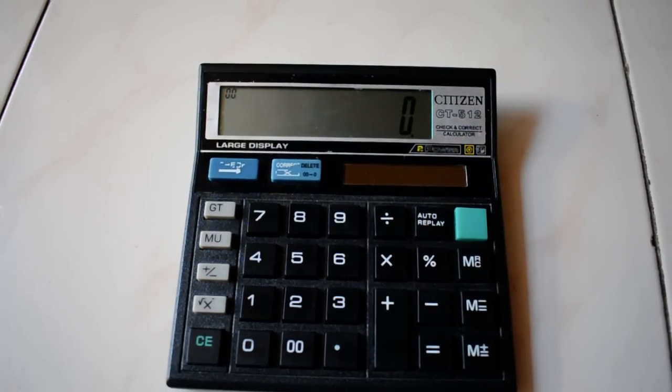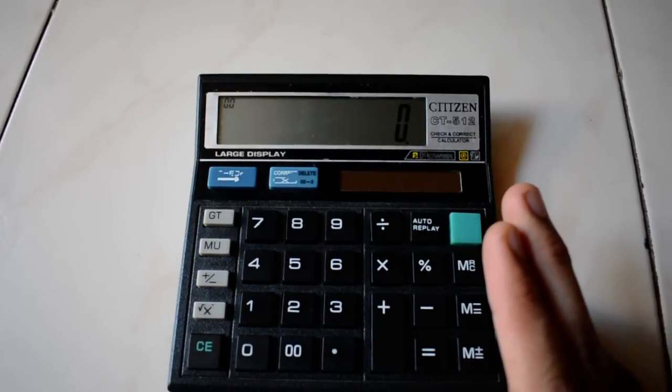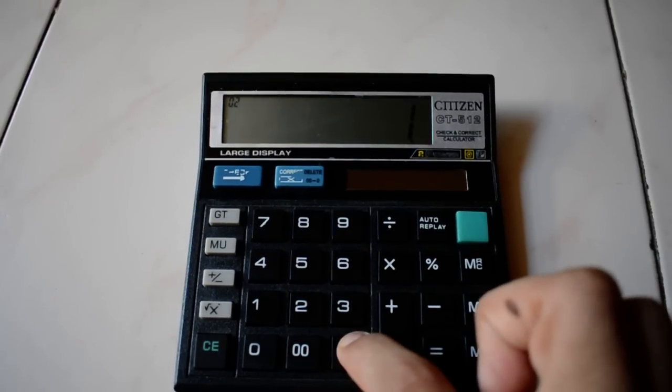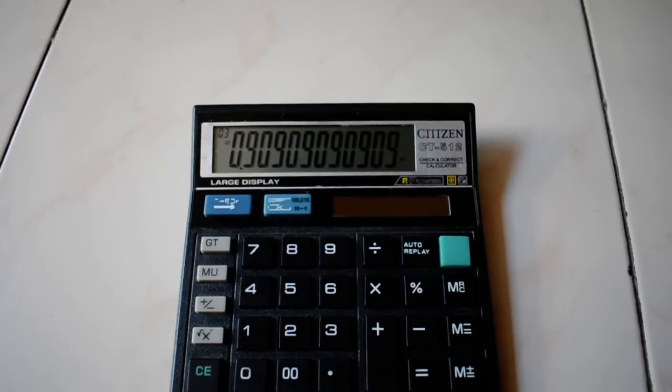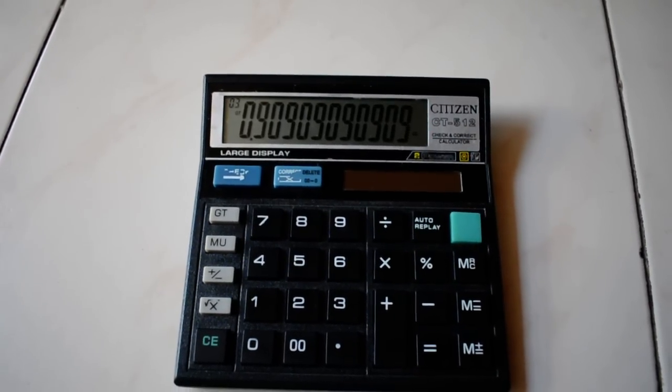Suppose I want to find the present value factor of 10%. What I will do is first I will press 1 divided by 1.10. So this is the present value factor of the first year. For getting the present value factor of the second year, what I have to do is just press equal to.